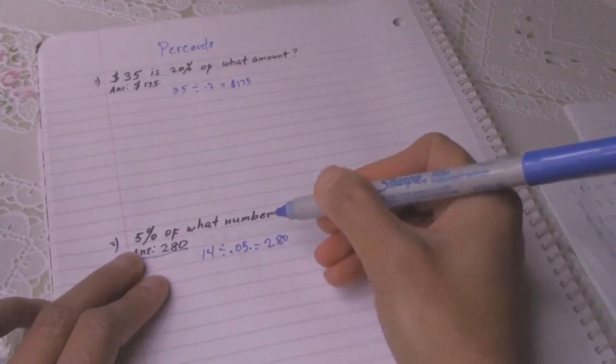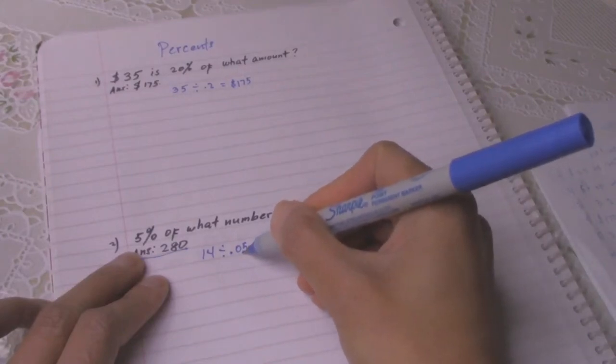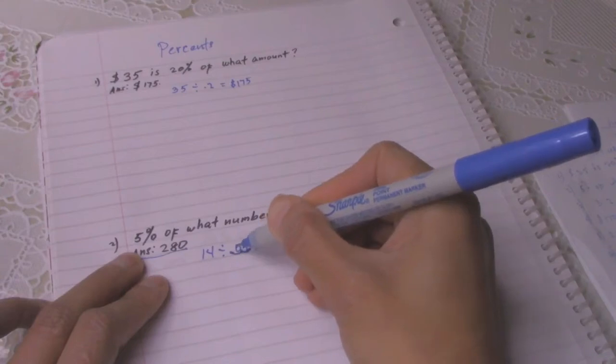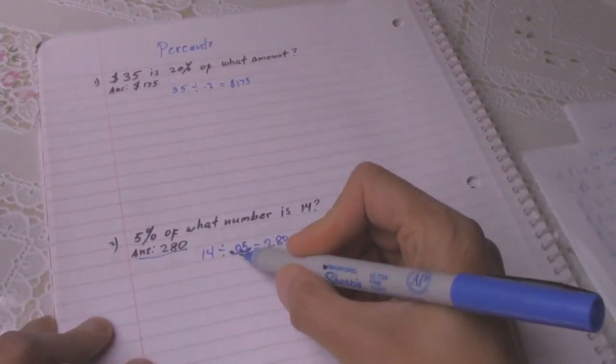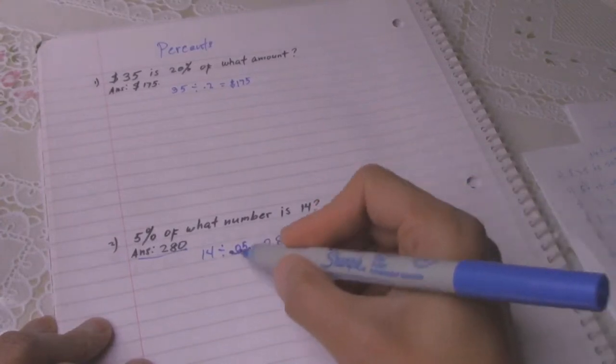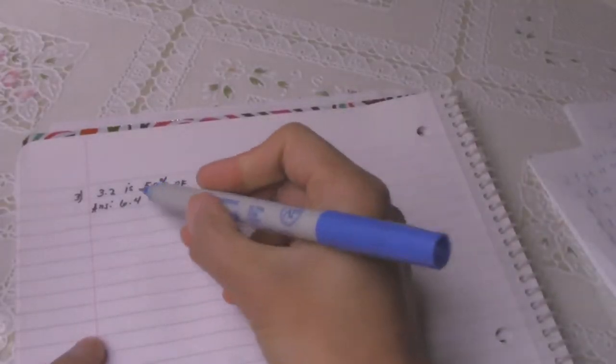So how did I get that 0.05? To translate the 5 percent, you need to move from right to the left 2 times. That's how you get the 0.05.